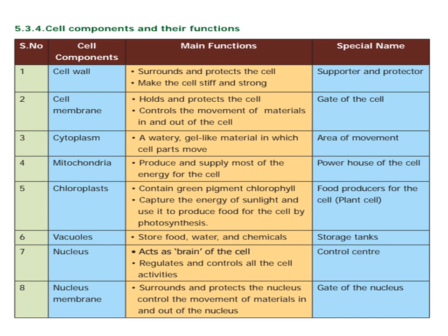The cell wall is found in plant cells. Its special name is supporter and protector. Cell membrane is found in both plant and animal cells — it protects the whole cell and controls the amount of materials in and out of the cell. Its special name is gate of the cell.